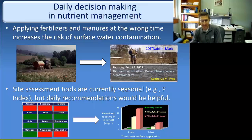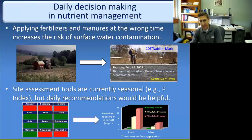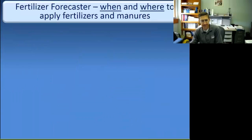These timing issues are really critical. You're basically applying manure at the right time to reduce those incidental nutrient losses — the wash-off of phosphorus and nitrogen when you apply manure right before or right following a rainfall runoff event.